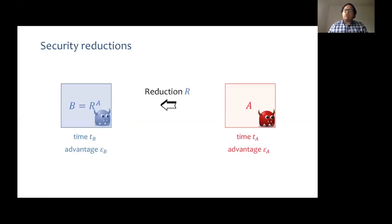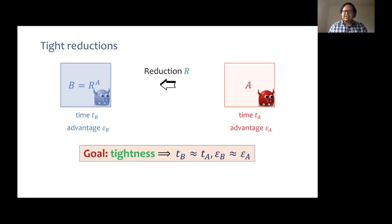In the context of this work, we are interested in studying reductions from a concrete security perspective. Hence, we capture the power of an adversary in terms of its time complexity T and advantage epsilon. For such a reduction to be meaningful, we want it to be as tight as possible — namely, the running time and the advantage of B must be very close to that of A.